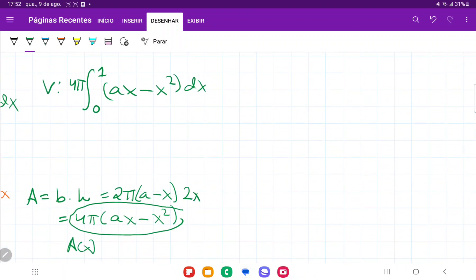So we can now take the antiderivative. So that is equal to 4π times (ax² over 2 minus x³ over 3), and all of this from 0 to 1, which equals 4π times (a/2 minus 1/3). And that is our volume.